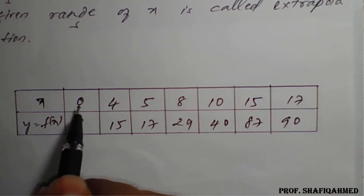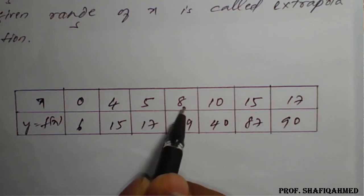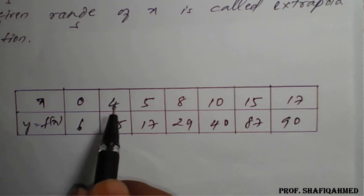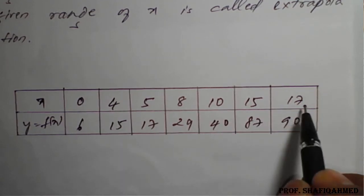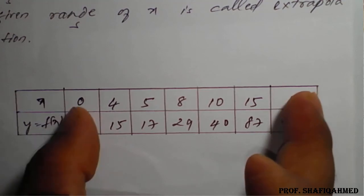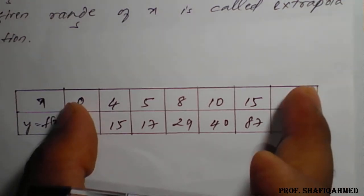x varies from 0, 4, 5, 8, 10, 15, so on. Here 0 to 17 means you may get 0, 1, 2, 3, 4, 5, 6, 7, 8, 9, 10 till 17. This is the range for x here.